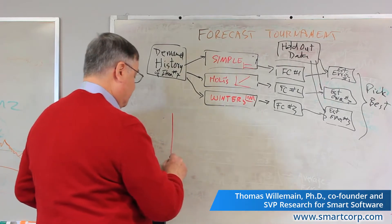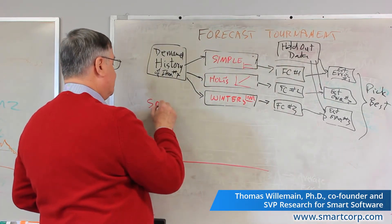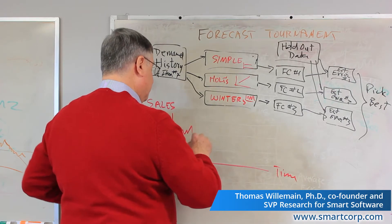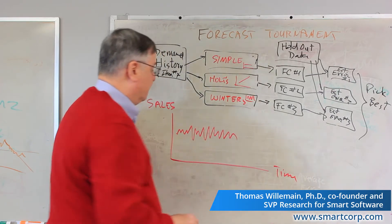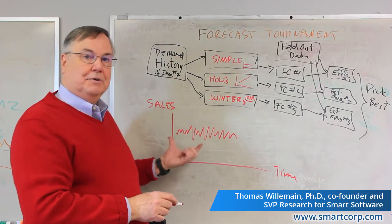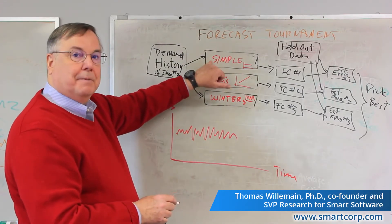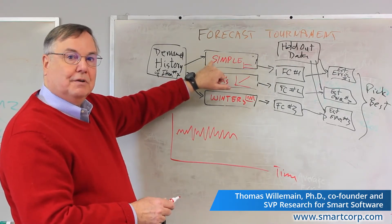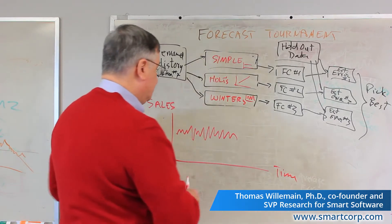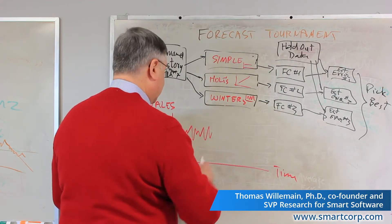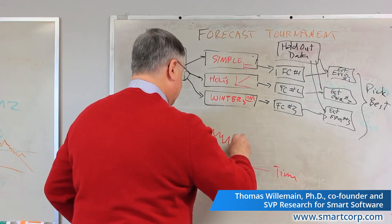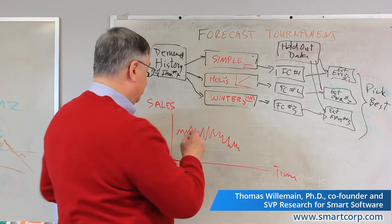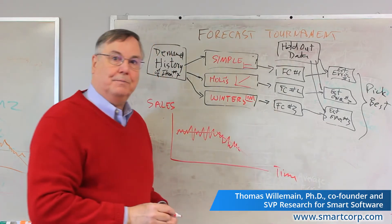Let me draw a picture that might represent something like that. Let's suppose that we're looking at sales versus time. If we had a data series that looks something like this, we would pretty clearly say that there's no trend and no seasonality, so simple or single exponential smoothing would be the one that would give us the most accuracy. However, suppose that what the actual series looks like is more something like this — now that's ambiguous. You could say it looks like there was a period of flatness and now it's gone into a period of trend.